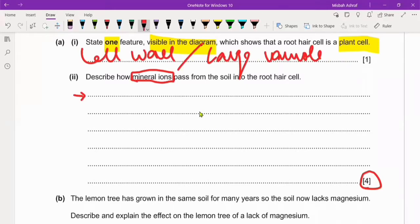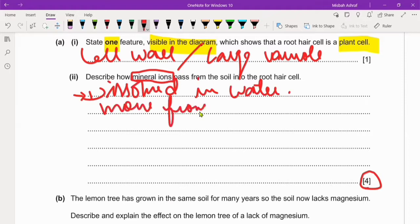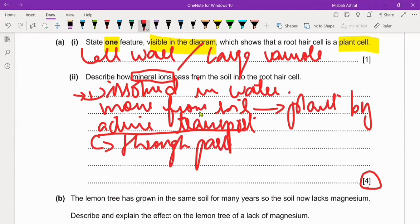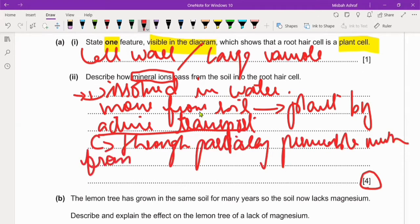Mineral ions move, or they are actually dissolved in water. They move from soil to plant by active transport through partially permeable membrane. They move from low to high concentration.